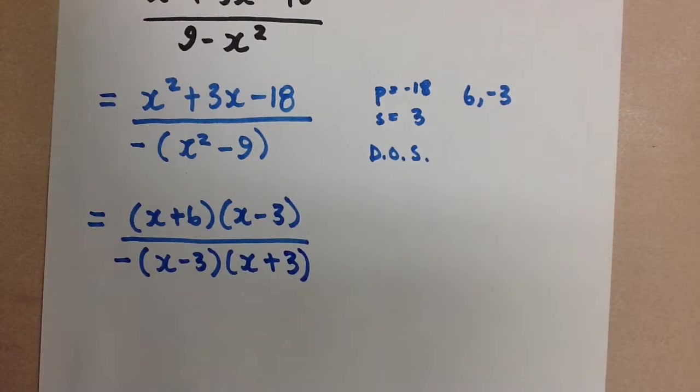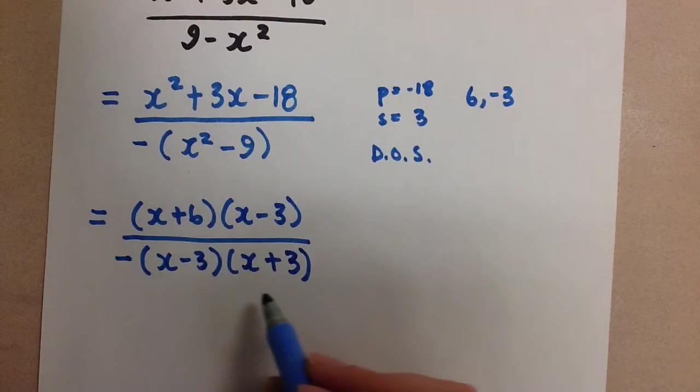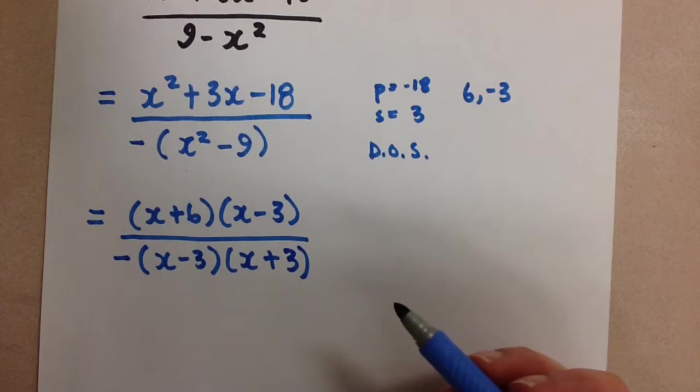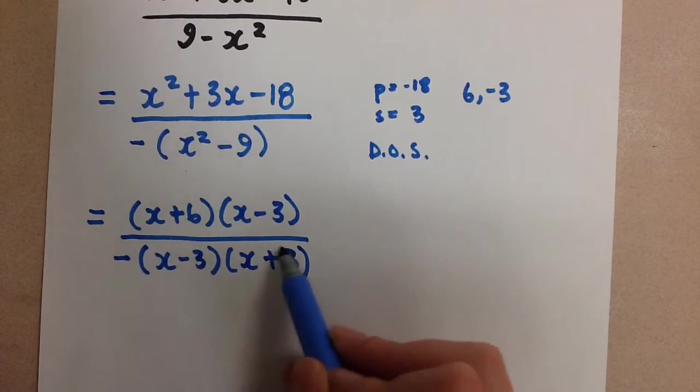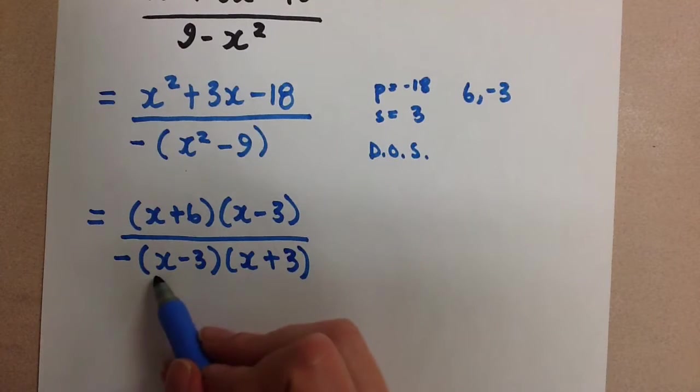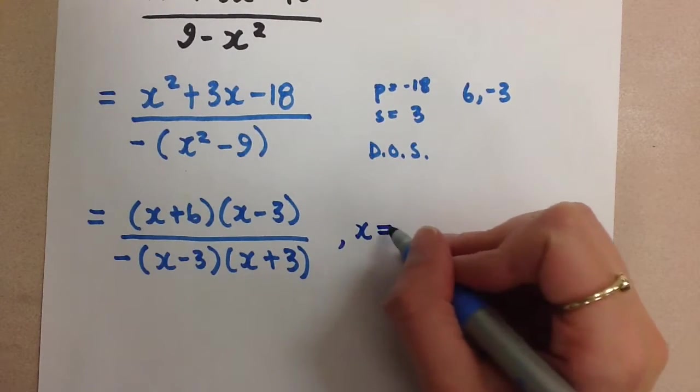So now that we've factored, the next thing that we should do is look at the restrictions. So our denominator can never be equal to 0. That's because we know that we can't divide by 0. So that means that this factor and this factor each cannot be equal to 0. Well, the value of x that will make this equal to 0 is when x is positive 3.